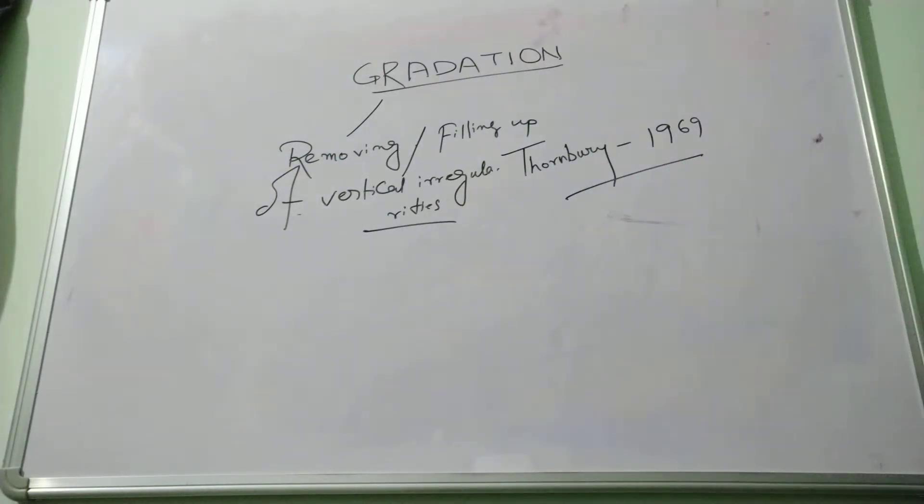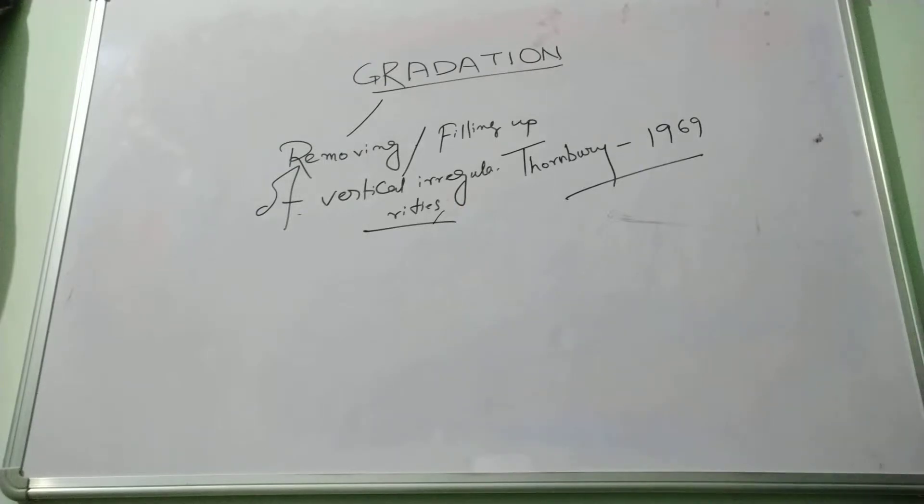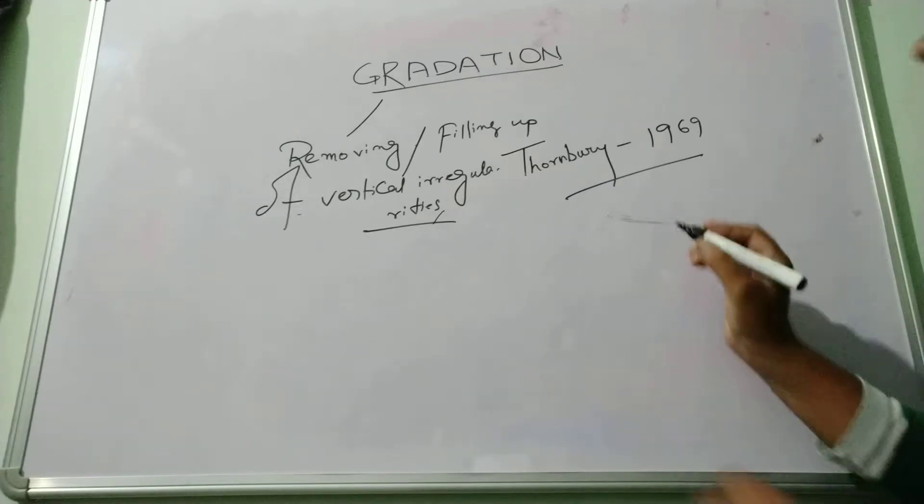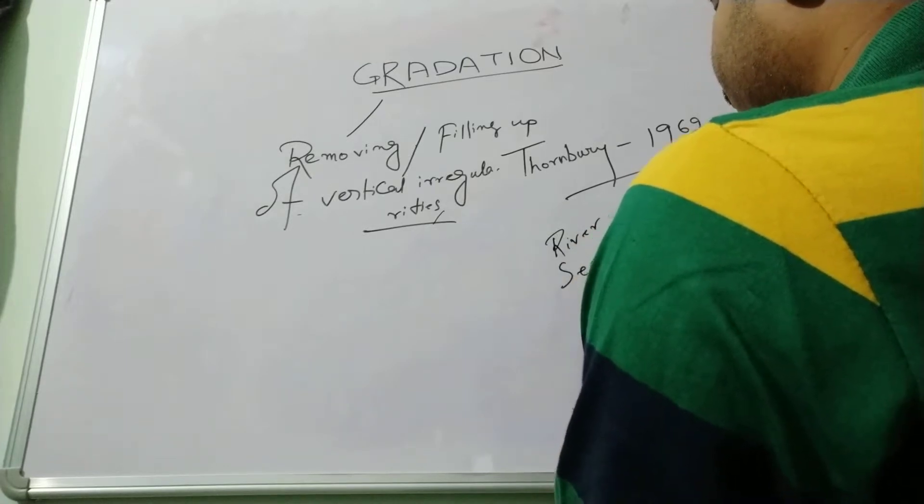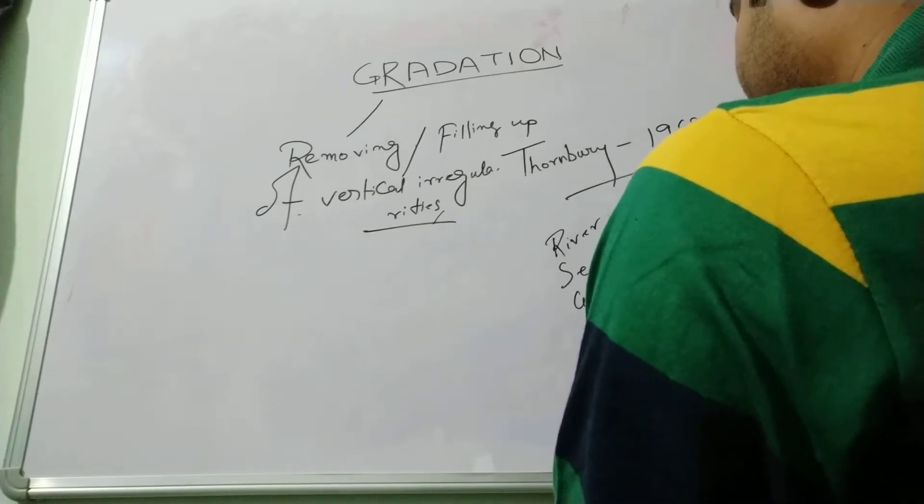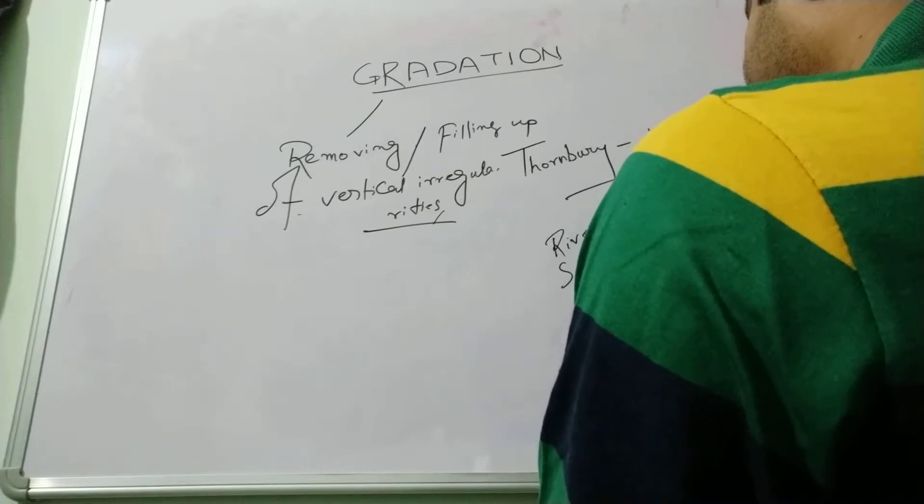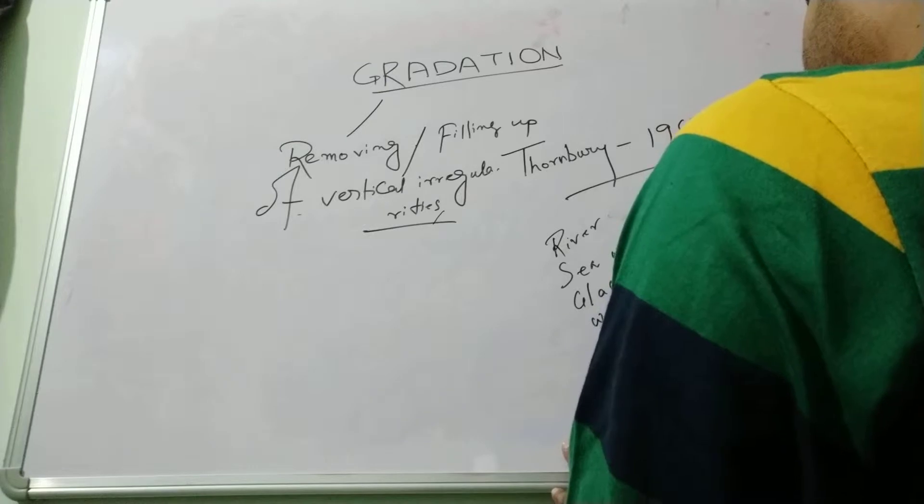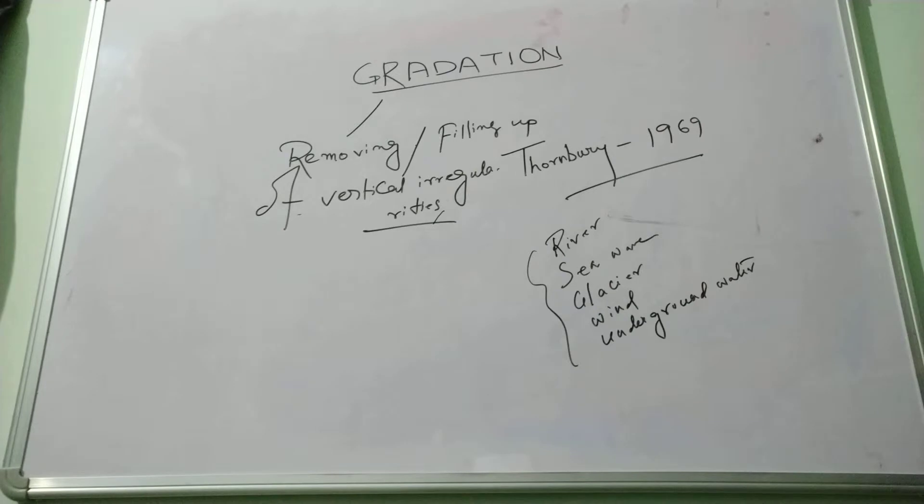Gradation is leveling up or leveling down of the vertical irregularities on the Earth's surface. There are several geomorphic agents that help in this process, like river, sea waves, glaciers, wind, and underground water. These are the geomorphic agents that are helping in this gradation process.